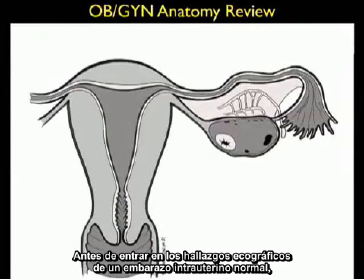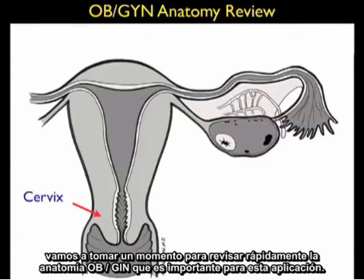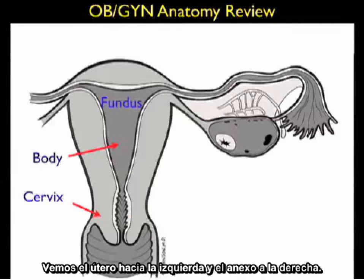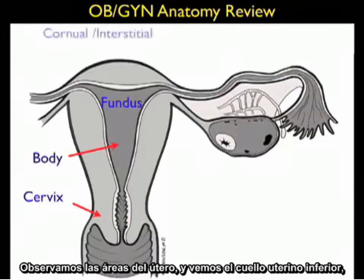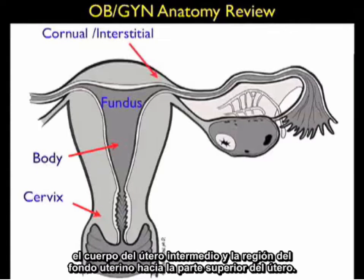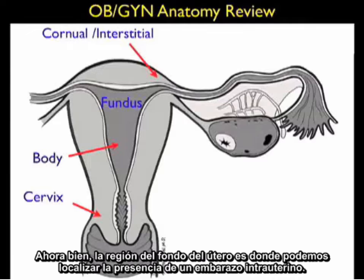Before launching into the sonographic findings of a normal intrauterine pregnancy, let's take a moment to quickly review the OBGYN anatomy important for this application. We see the uterus to the left and adnexa to the right. Notice the areas of the fallopian tube to the right, which we'll concentrate more on with regard to ectopic pregnancy, and we see the bronchial region towards the top of the uterus.